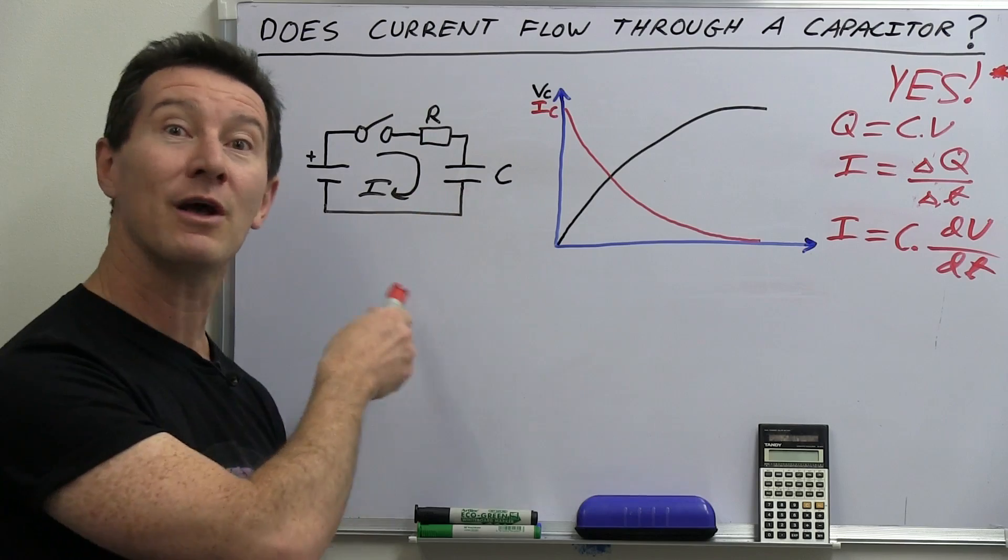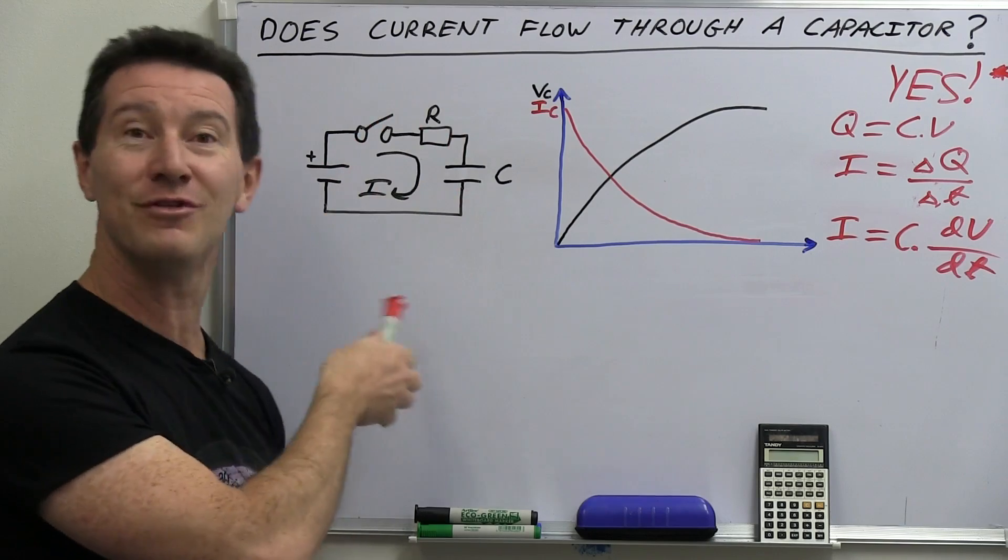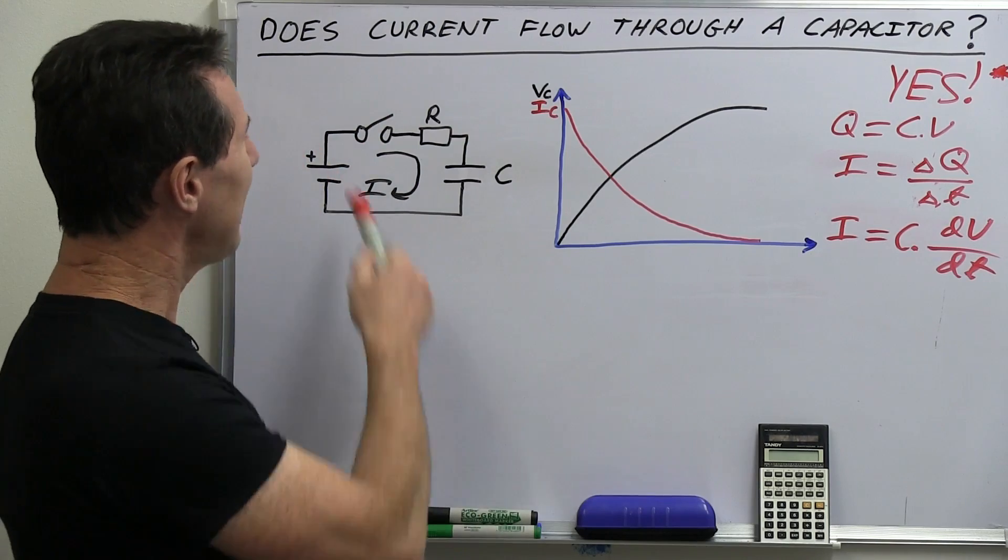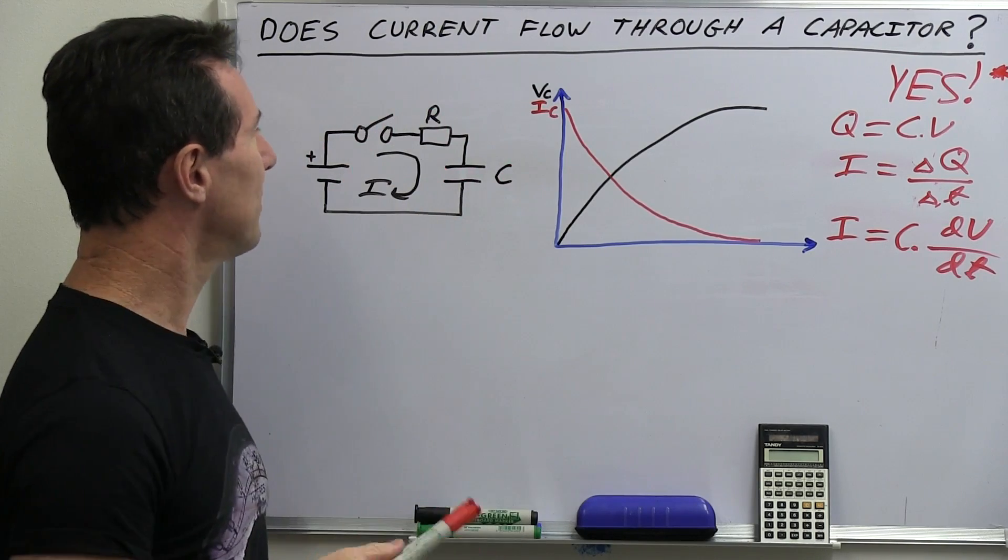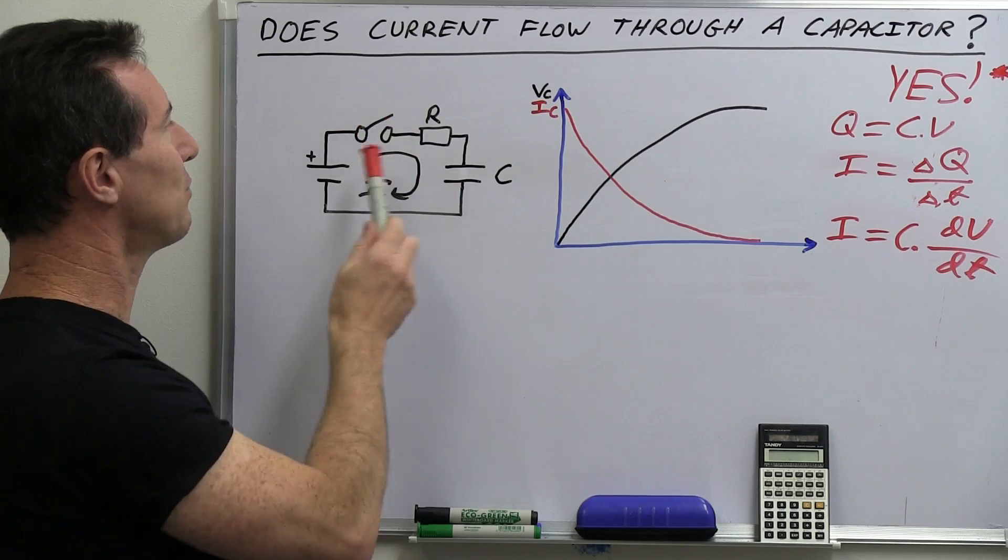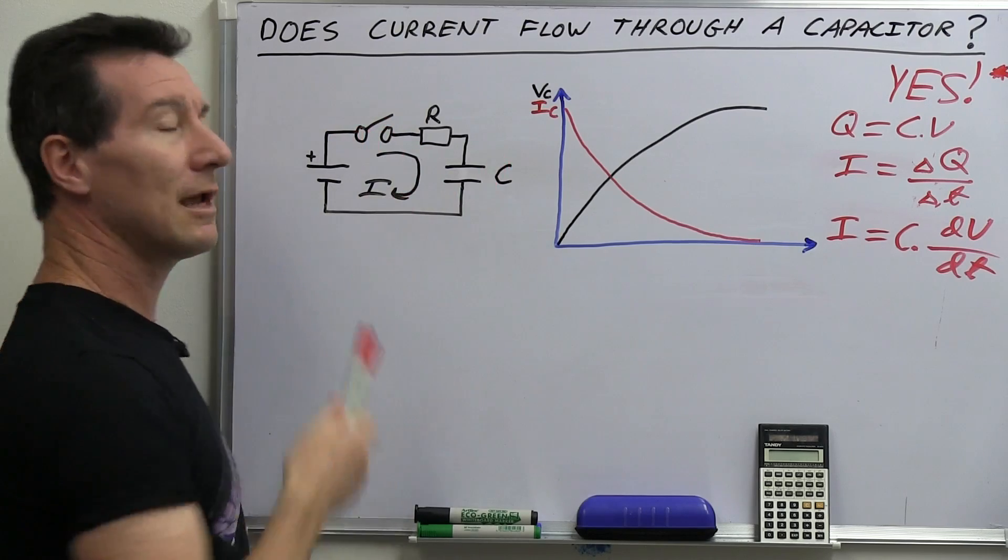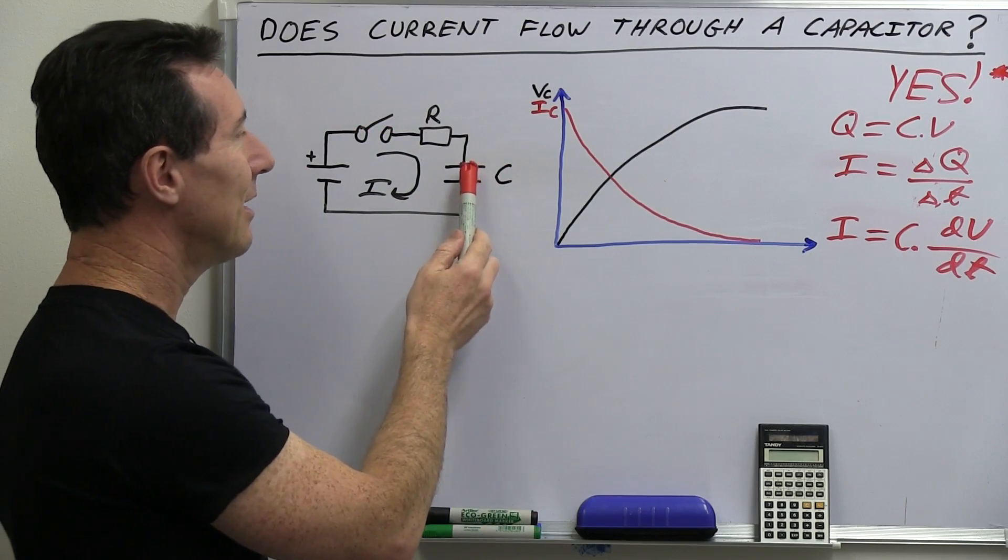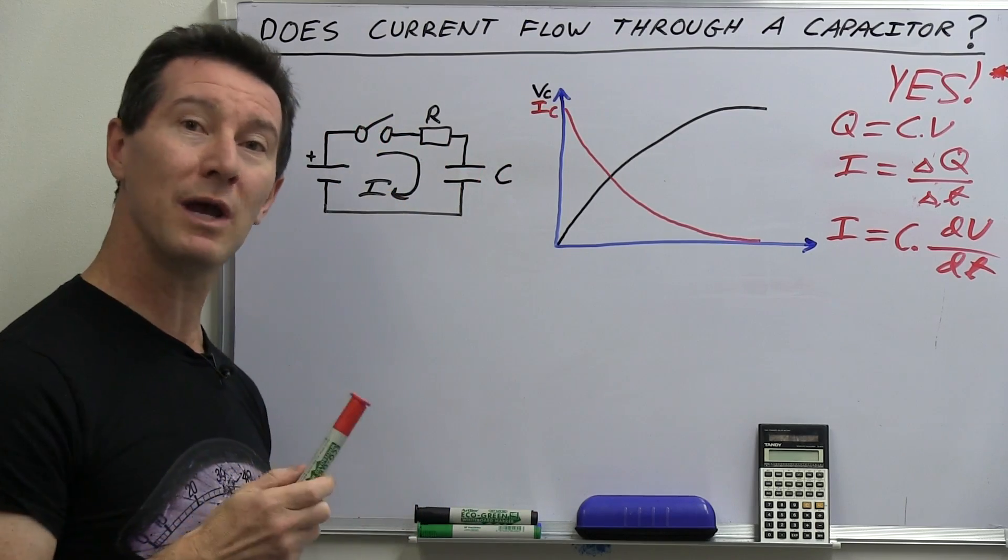Now, let's not get into drift velocity and stuff like that. There's a whole nother can of worms where the electrons move at like one millimeter per second through the entire circuit. Google that one. But yeah, it's just the flow of electrons in this circuit. That's why when you break the switch, no electrons can flow in this circuit at all.